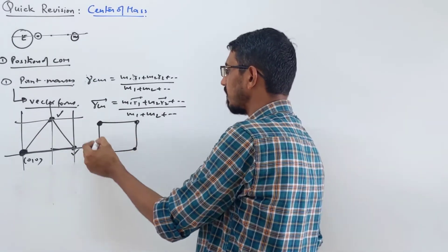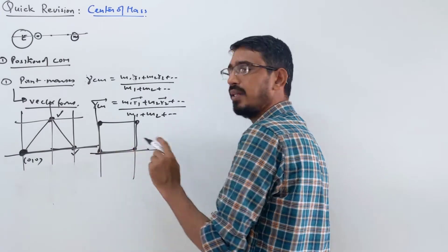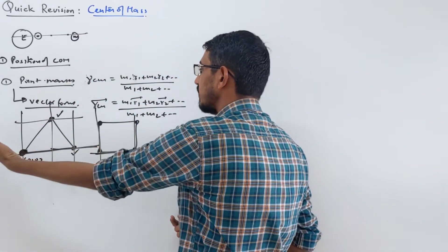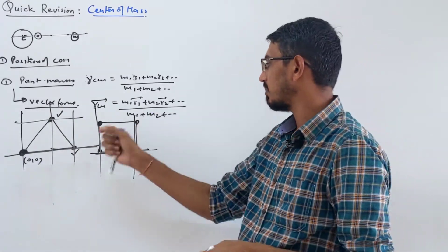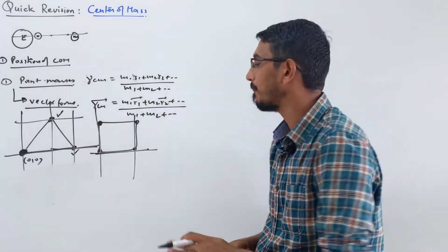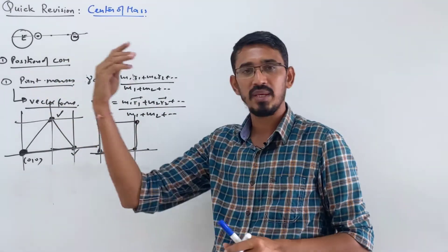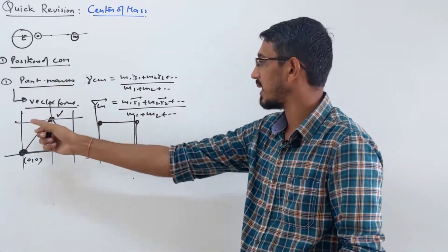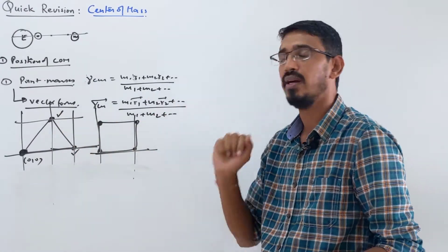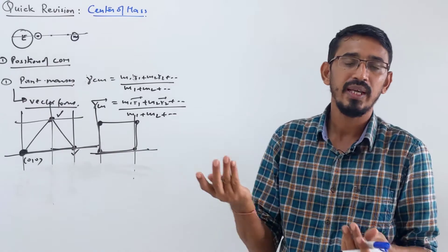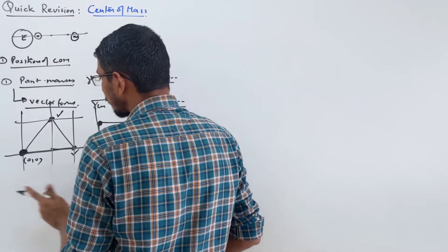Similarly for 4 masses, you can choose the coordinate system anywhere — always try to choose it so that at least one mass is at the origin, making calculations easier. So the first question type covers point masses — direct, vector form, or pictorial such as triangle or rectangle — where you choose a coordinate system and apply the formula to find x, y, and z coordinates.